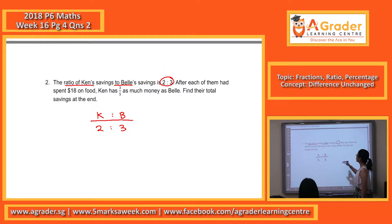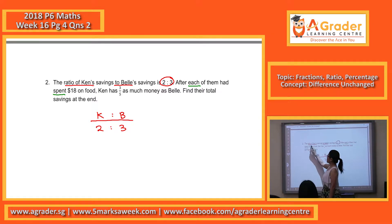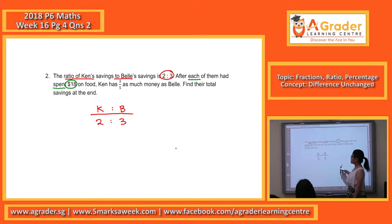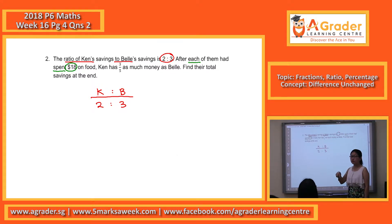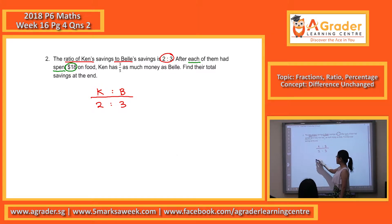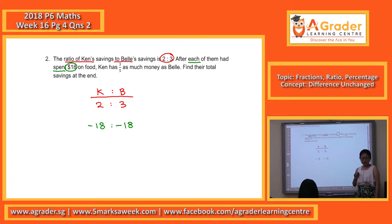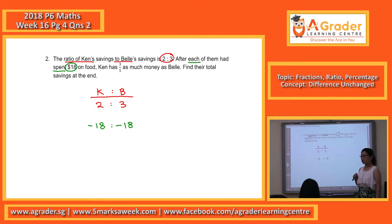After that, the next line: each of them actually spends $18 on food, so they spend the same amount of money. I'm going to write this in — I'll leave a little gap. Each side is minus $18.